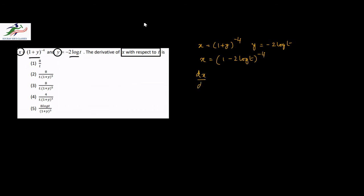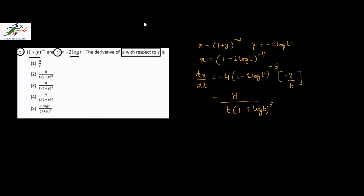So now if we take the derivative of x with respect to t, we get minus 4 into 1 minus 2 log t, whole to the power minus 5, into the derivative of 1 minus 2 log t. So after rearranging, this becomes 8 by t into 1 minus 2 log t to the power 5, which we can write in terms of y as 8 by t into 1 plus y to the power 5. So option 3, which is 8 by t into 1 plus y to the power 5, is the correct choice.